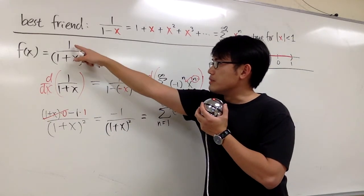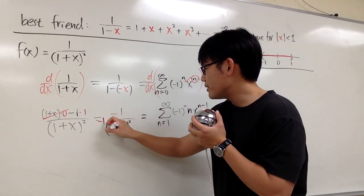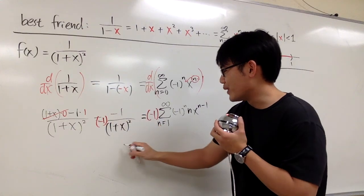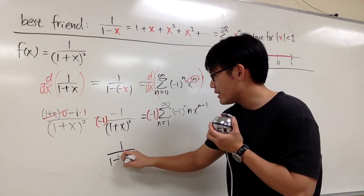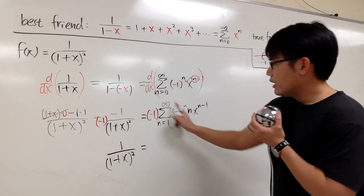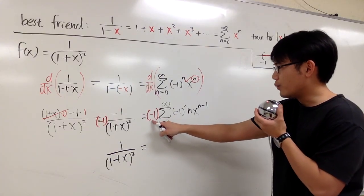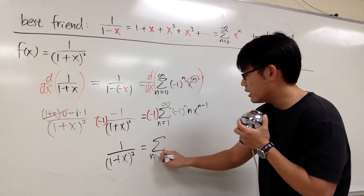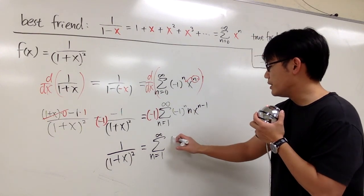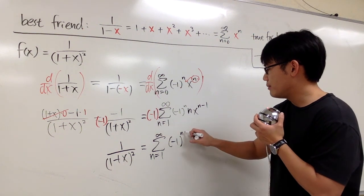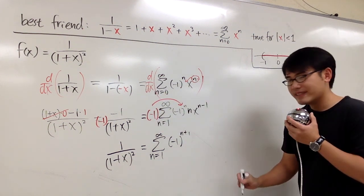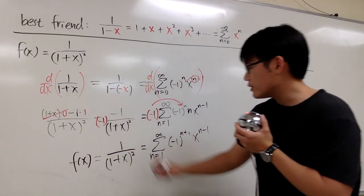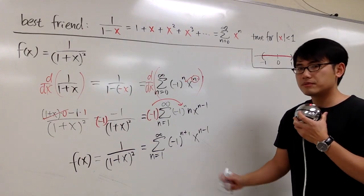Our original function has positive 1 on top, but here we have negative 1. We can multiply both sides by negative 1. Negative 1 times negative 1 gives positive 1 on top over (1 plus x) squared. On the right side, we multiply the negative 1 inside the sigma, giving sigma from n equals 1 to infinity of negative 1 to the (n+1) power times n times x to the (n minus 1). That's the power series expansion.